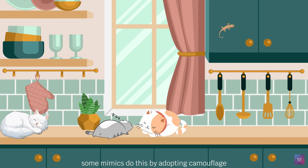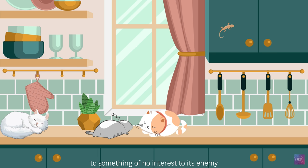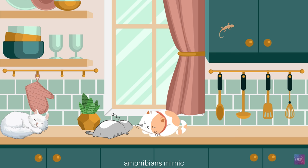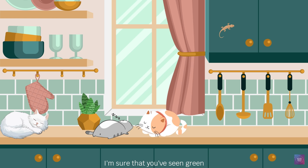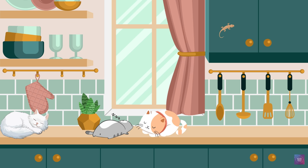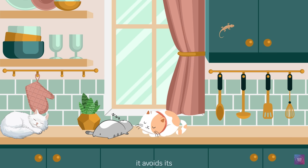Some mimics do this by adopting camouflage, which is a cryptic resemblance to something of no interest to its enemy. By doing this, they become invisible — they are hidden. Many animals, insects, lizards, and amphibians mimic the abundant plant life in the habitat around them. Green grasshoppers and brown moths seem to be well hidden on grass stems and tree trunks when motionless. But the leaf-tailed gecko, a small lizard in Madagascar, is a master at this — it avoids its enemies by looking exactly like a cluster of old dead leaves.